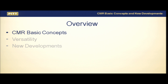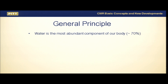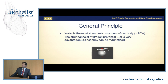The general principle about cardiac MR is that water is the most abundant component in our body — about 70% of our body is made out of water. This is very helpful when we want to create images. These hydrogen protons are what we're going to magnetize. We use our own source of water to magnetize these protons and manipulate them whichever way we want.